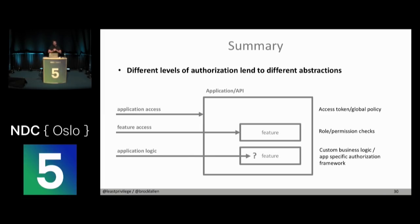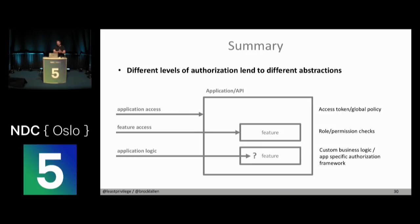To summarize — and you might come to different conclusions, but this is how we think it works based on implementing it successfully in several projects: for global application access, use a global policy and access tokens. For feature access, roles and permissions work really well. Once you are inside a feature, I don't think it's authorization anymore — it's business logic. The medication example with amount and medication type is already crossing the line into business logic, because a hospital system probably has a core business feature understanding of how much a patient can take of what. It's pretty easy to get that wrong.